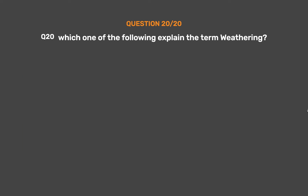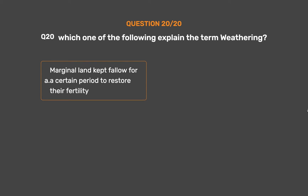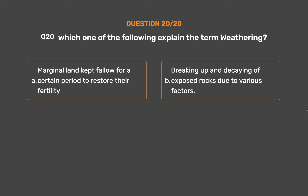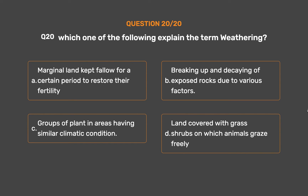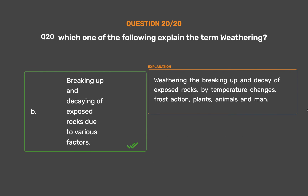Question No. 20. Which one of the following explains the term weathering? Option A: Marginal land kept fallow for a certain period to restore their fertility. Option B: Breaking up and decaying of exposed rocks due to various factors. Option C: Groups of plants in areas having similar climatic condition. Option D: Land covered with grass shrubs on which animals graze freely. The correct answer is Option B: Breaking up and decaying of exposed rocks due to various factors. Weathering is the breaking up and decay of exposed rocks by temperature changes, frost action, plants, animals and man.